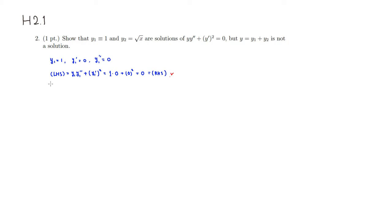Now let's look at y2. So y2 is the square root of x, which we can write as x to the 1/2 power. The derivative y2 prime is 1/2 x to the negative 1/2. And the second derivative y2 double prime would be 1/2 times negative 1/2, which is negative 1/4, x to the negative 3/2.